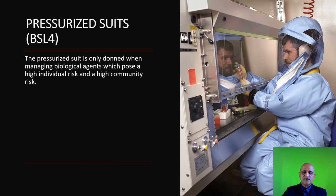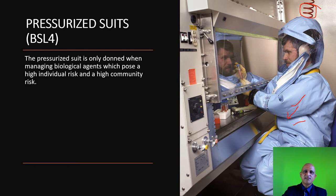Pressurized suits are generally used in a BSL-4 laboratory and are supplied with pressurized air via a tube. The suit is maintained as a positive pressure environment. In the case of a breach of containment — for instance a tear in the suit or a needle stick injury — air will exit through the suit and prevent the intake of any biological agent. Pressurized suits are extremely expensive and their usage is limited to BSL-4 and other high containment facilities.